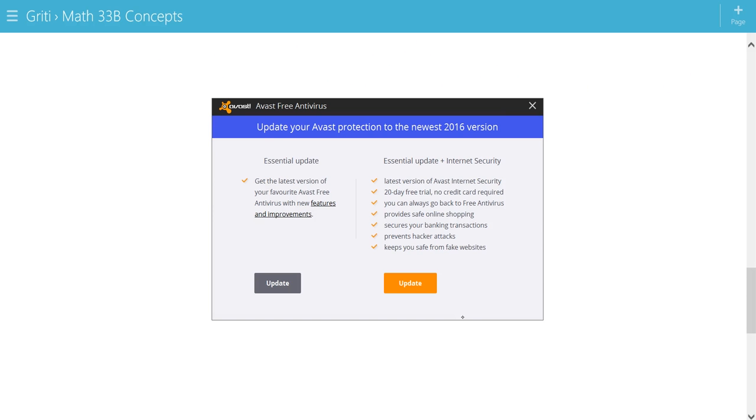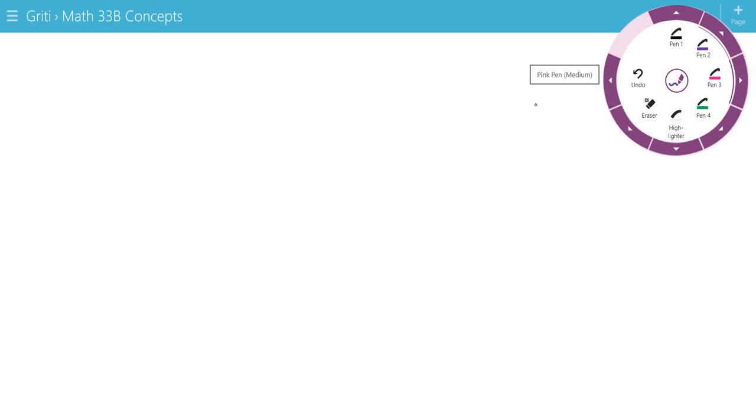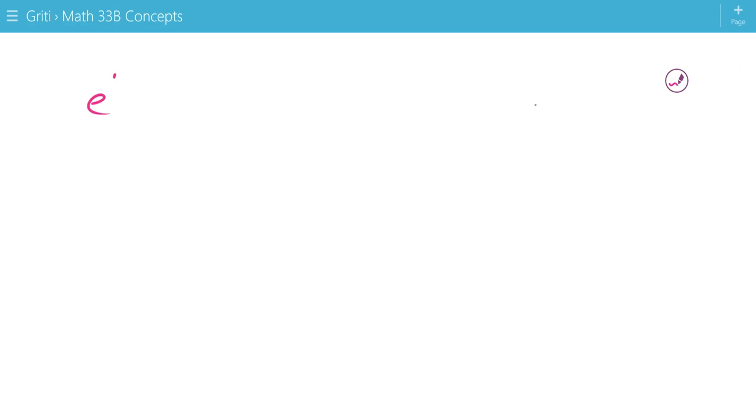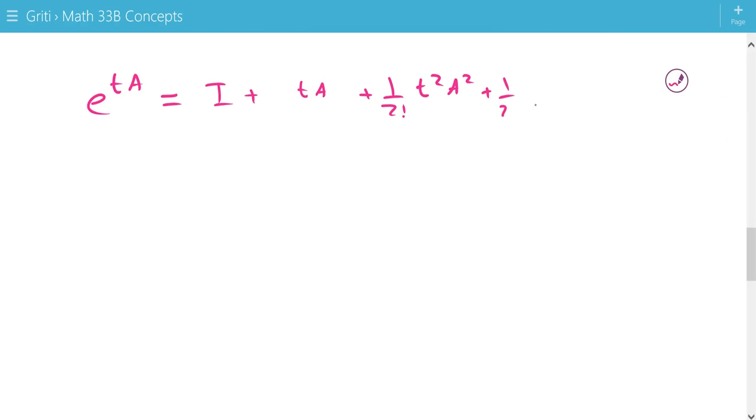So now that we've found out what e to the a is, we want to know what e to the a t is. Sorry about that. And e to the a t, or e to the t a is equal to i plus t a plus 1 over 2 factorial t squared a squared, let's remove these parentheses actually, plus 1 over 3 factorial t to the third a to the third, and so on.